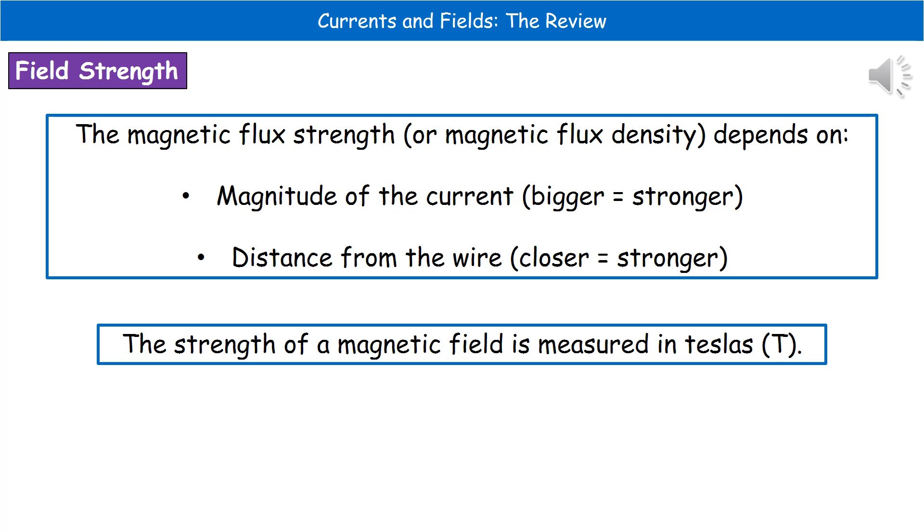When we're talking about measuring our magnetic field strength, we use these units called Teslas, which are given the capital T as their unit.